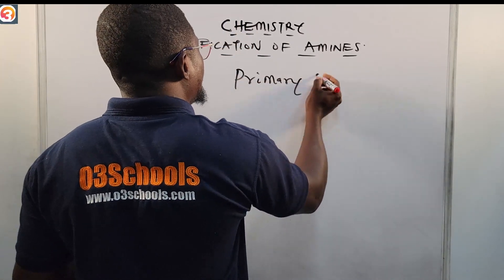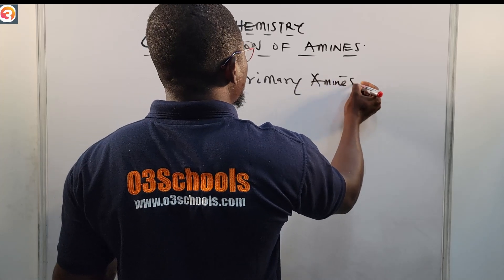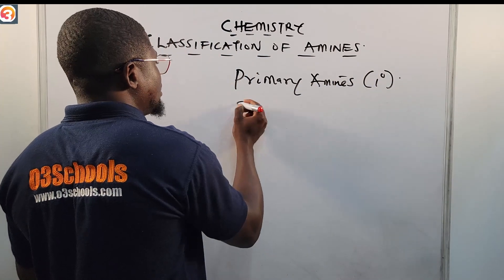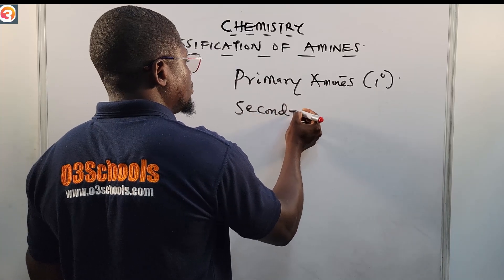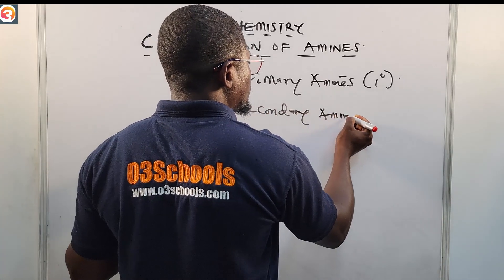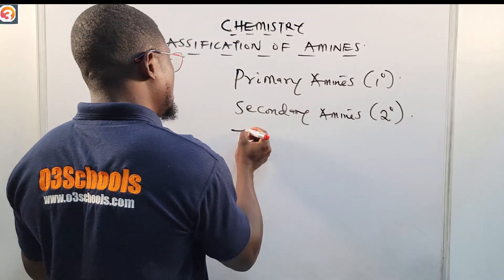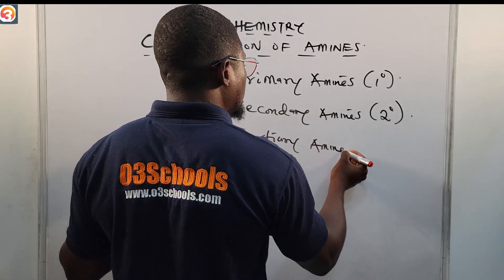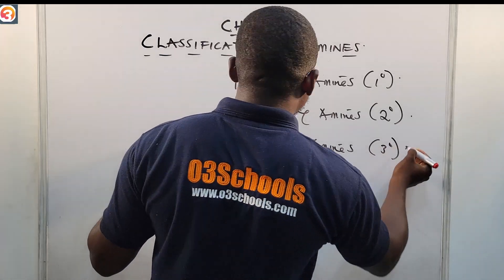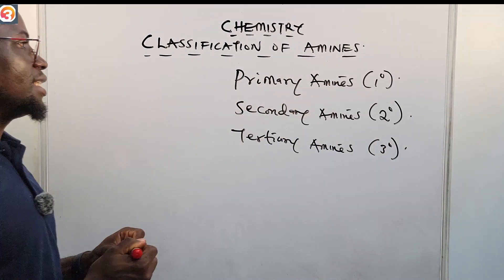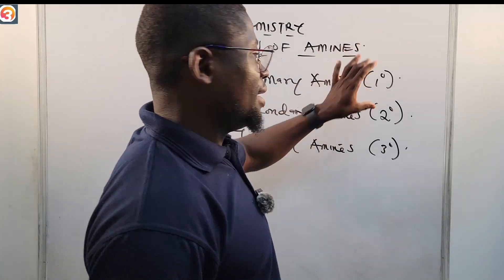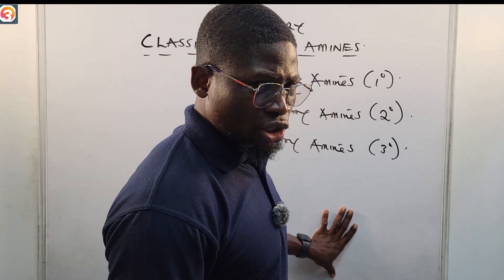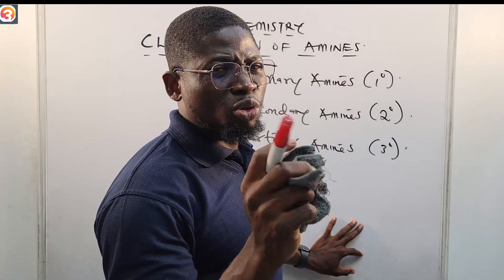You can classify amines into three types: primary amines — also called first-degree amines; secondary amines — second-degree amines; and tertiary amines — third-degree amines. So we have primary, secondary, and tertiary amines. That is the classification of amines.